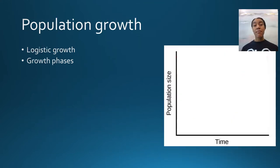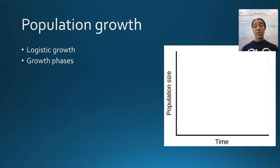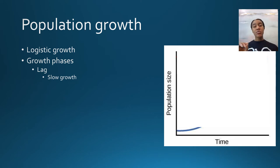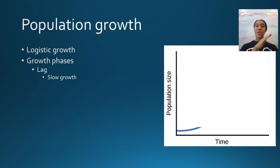We're going to begin by talking about population growth. Populations typically grow following a logistic curve. If you've ever taken a microbiology class or know anything about how bacteria grow, you might be familiar with this concept. In logistic growth, there are generally three different phases. The first is the lag phase, characterized by slow, steady growth right after you introduce a species to an environment — they're reproducing, but you're not seeing a huge spike in density yet.